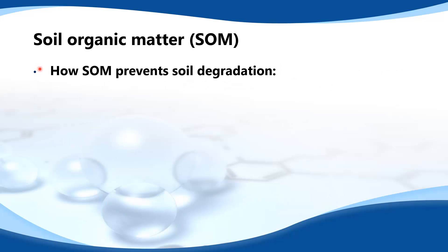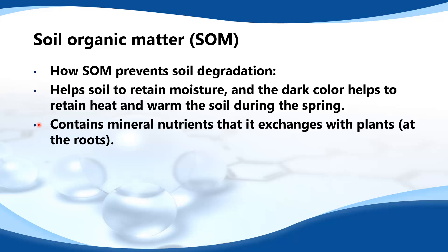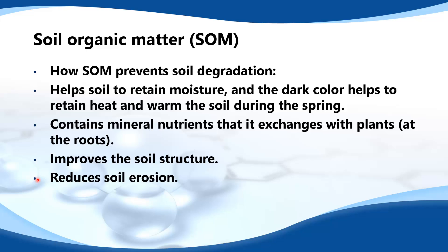Next we look at how soil organic matter prevents soil degradation. It helps soil to retain moisture, and the dark color helps to retain heat and warm the soil during the spring. It contains mineral nutrients that it exchanges with plants at the roots. It improves the soil structure and reduces soil erosion.